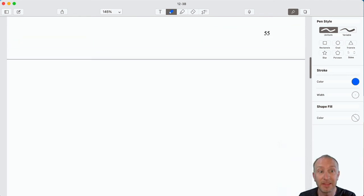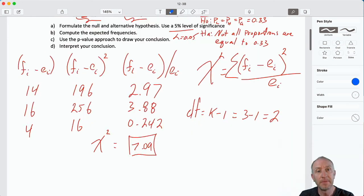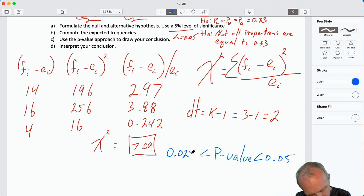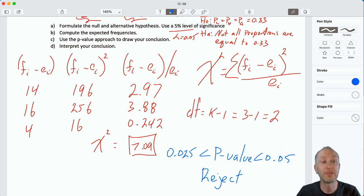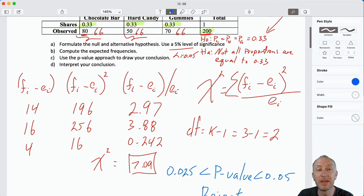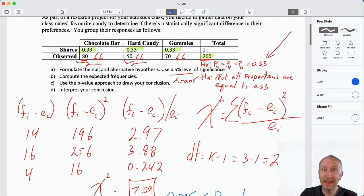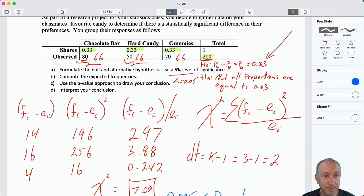We can reject the null hypothesis. I have a p-value that is less than 0.05, greater than 0.025. We have sufficient evidence here to reject the null hypothesis, which means not all of those candies are equally preferred among my classmates. There's definitely some difference here.